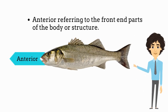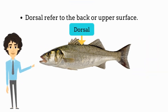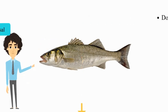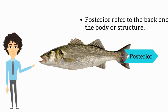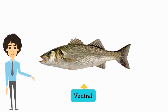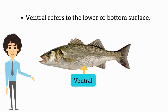Anterior: referring to the front end parts of the body or structure. Dorsal: referring to the back or upper surface. Posterior: referring to the back end part of the body or structure. Ventral: refers to the lower or bottom surface.